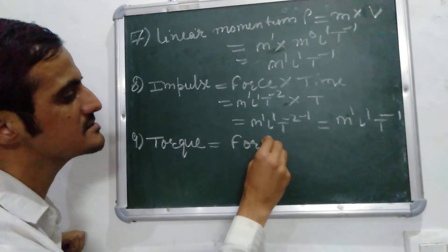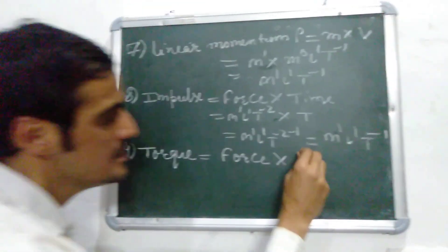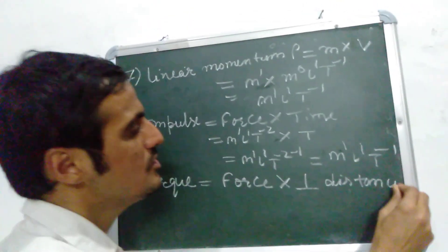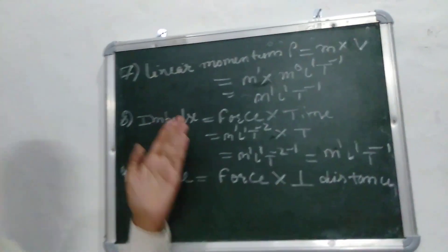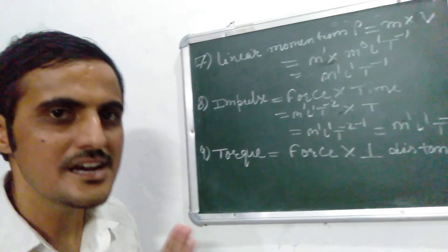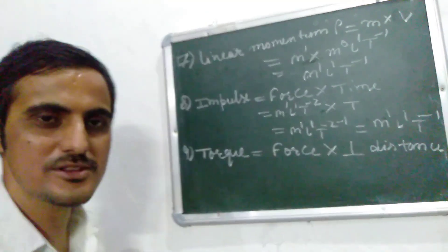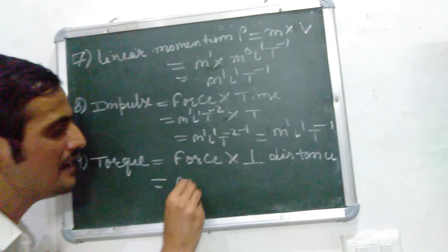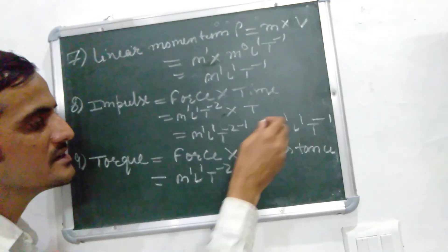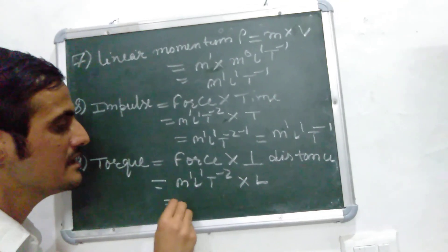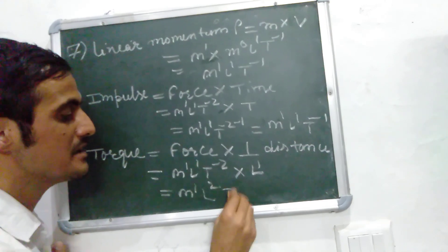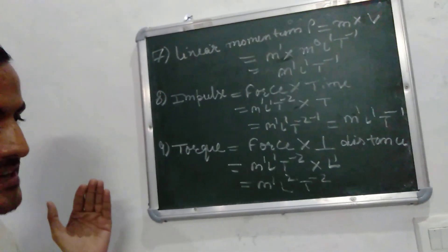Next is torque. Torque is equal to force multiplied by perpendicular distance. Force is mass into acceleration, giving M1 L1 T-2. Multiplied by distance L, it comes out to be M1 L1+1 T-2, which is M1 L2 T-2. This is the dimensional formula of torque.